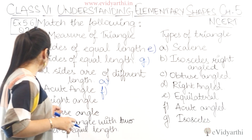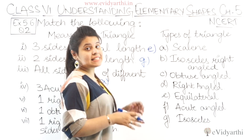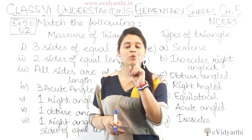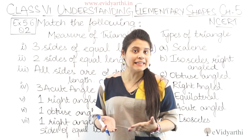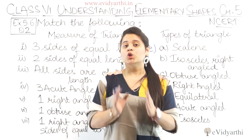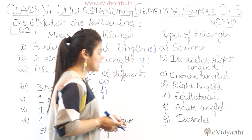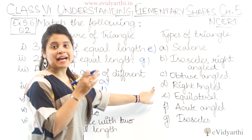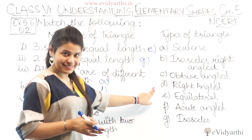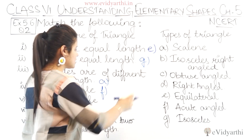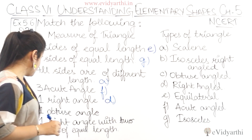Next is one right angle. If a triangle has one right angle — meaning 90 degrees is given — then which triangle does it become? That is a right angle triangle. So this is the D part; we write D here.